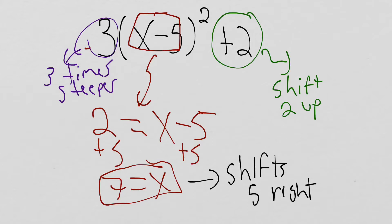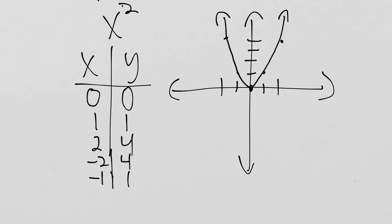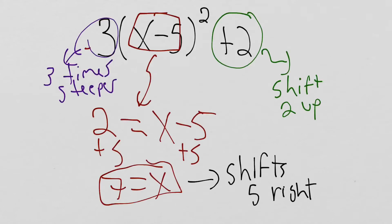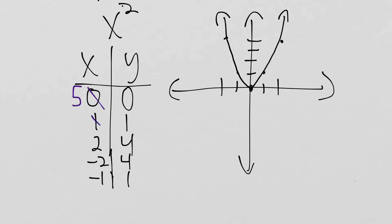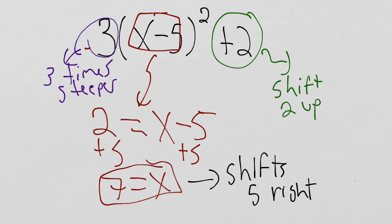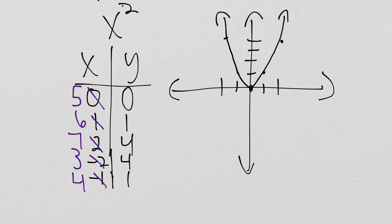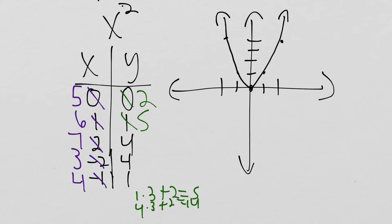If we go back to this table and apply these operations — first, we add 5 to all of our x values because we've shifted 5 to the right. So the x values become 5, 6, 7, 3, and 4. For the outputs, order of operations says we multiply by 3 first, then add 2. So 0 times 3 is 0, plus 2 gives 2. Then 1 times 3 is 3, plus 2 gives 5. Then 4 times 3 is 12, plus 2 gives 14. We can plot these points and get our transformed graph.